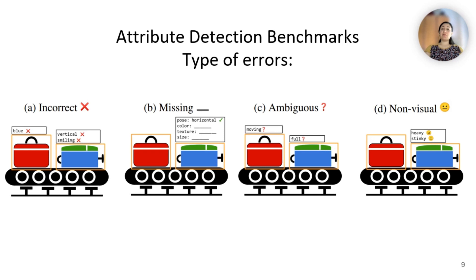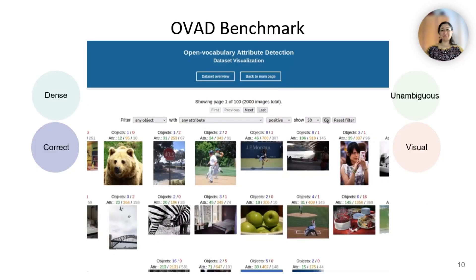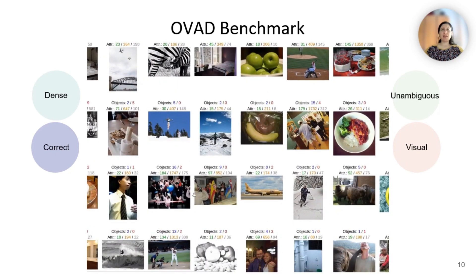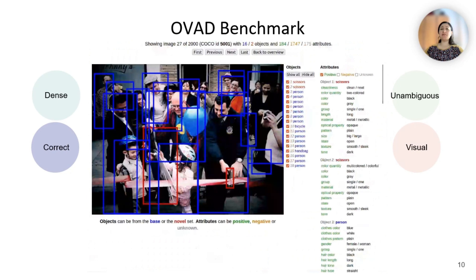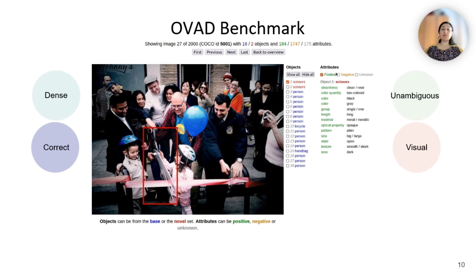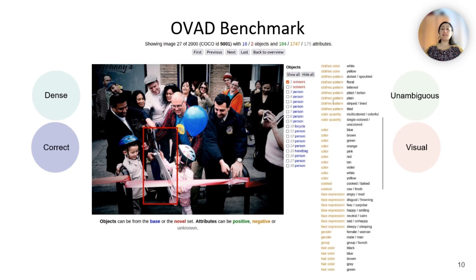To address these issues and provide a reliable attribute benchmark, we created a new evaluation dataset ensuring correct, dense, unambiguous, and visually consistent annotations. We introduced the OVAD benchmark, an evaluation dataset specifically designed for open vocabulary attribute detection. The OVAD benchmark has all attributes marked as either positive, negative, or unknown for each object. This dense annotation minimizes missing-type errors, and negative attribute annotations enable quantifying false positive predictions. During evaluation, attributes marked as unknown are excluded in cases where either the attribute isn't determinable or a clear discrete label cannot be assigned.